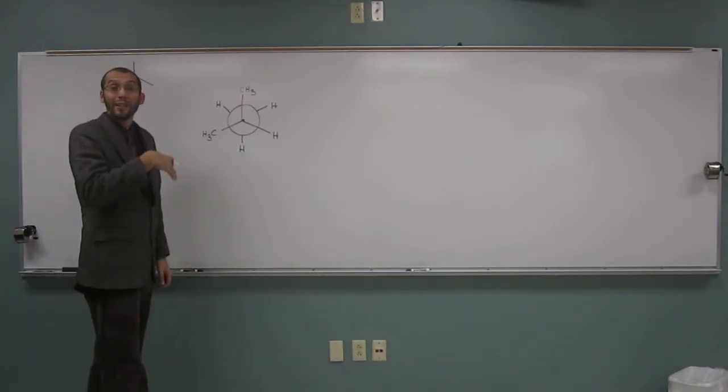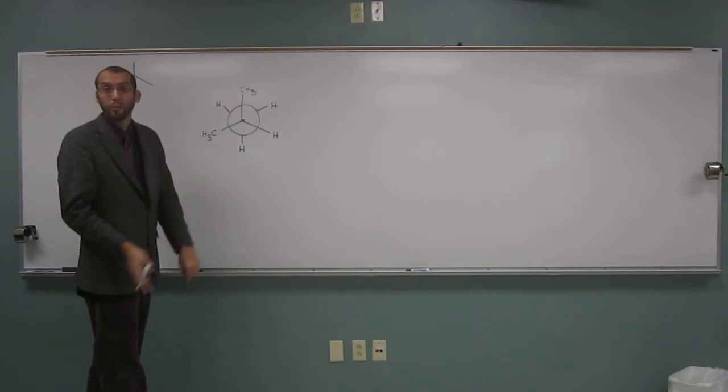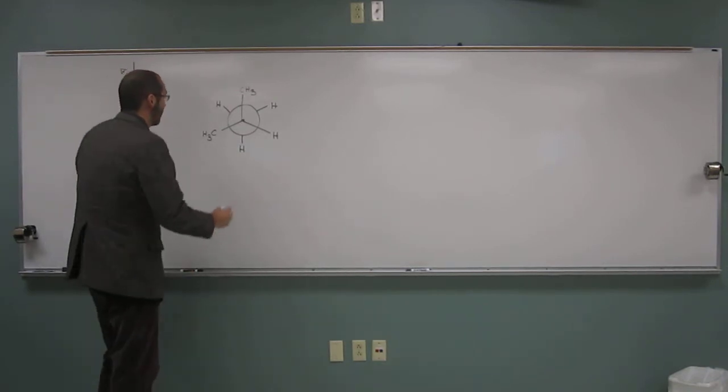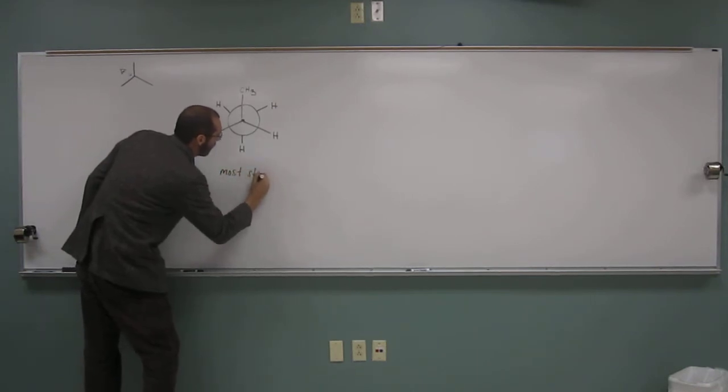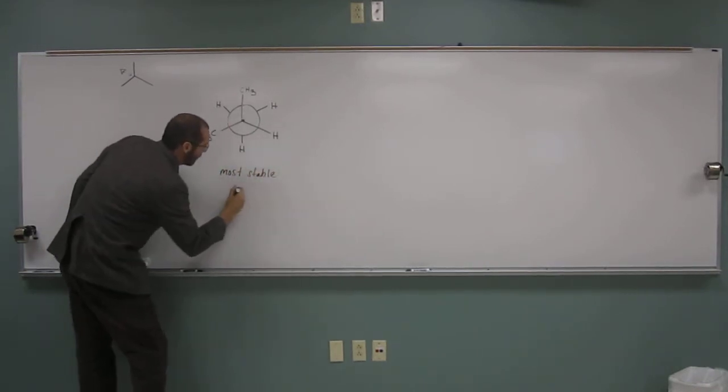If you wanted to draw the least stable, that's just going to be the eclipse point. Yeah, that's all they're saying. So the most stable is this one, the staggered.